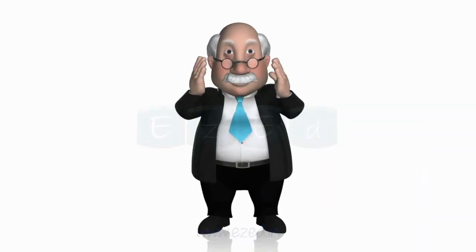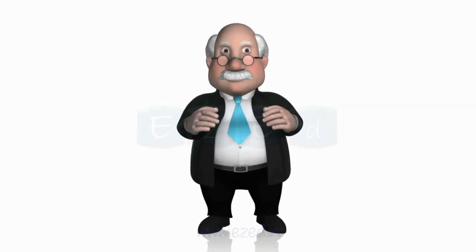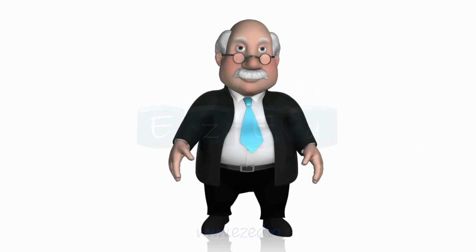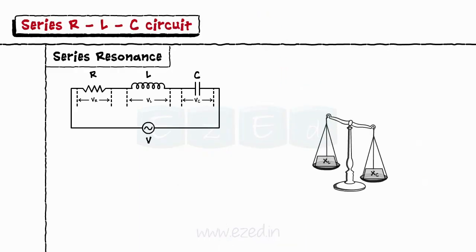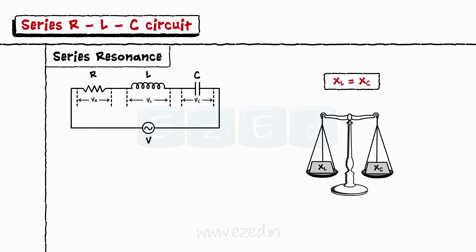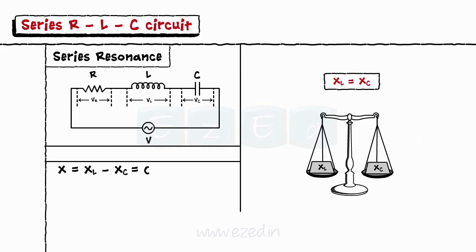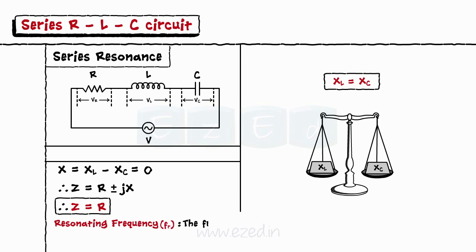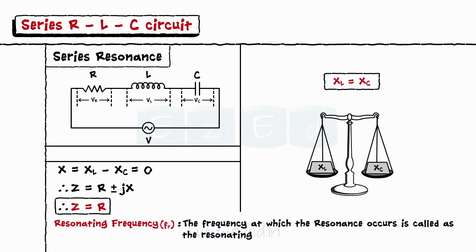Pay attention — this is important. In a series RLC circuit, sometimes the inductive reactance becomes equal to the capacitive reactance. Thus, the net reactance becomes zero and the impedance becomes equal to resistance only. This condition is called resonance, and the frequency at which it occurs is called the resonating frequency.